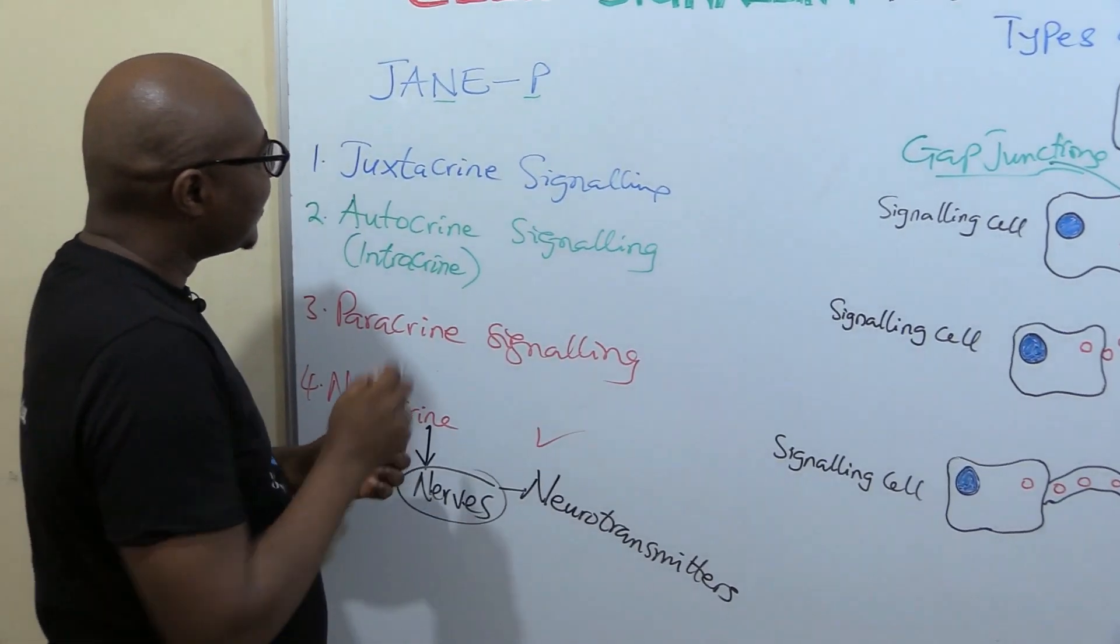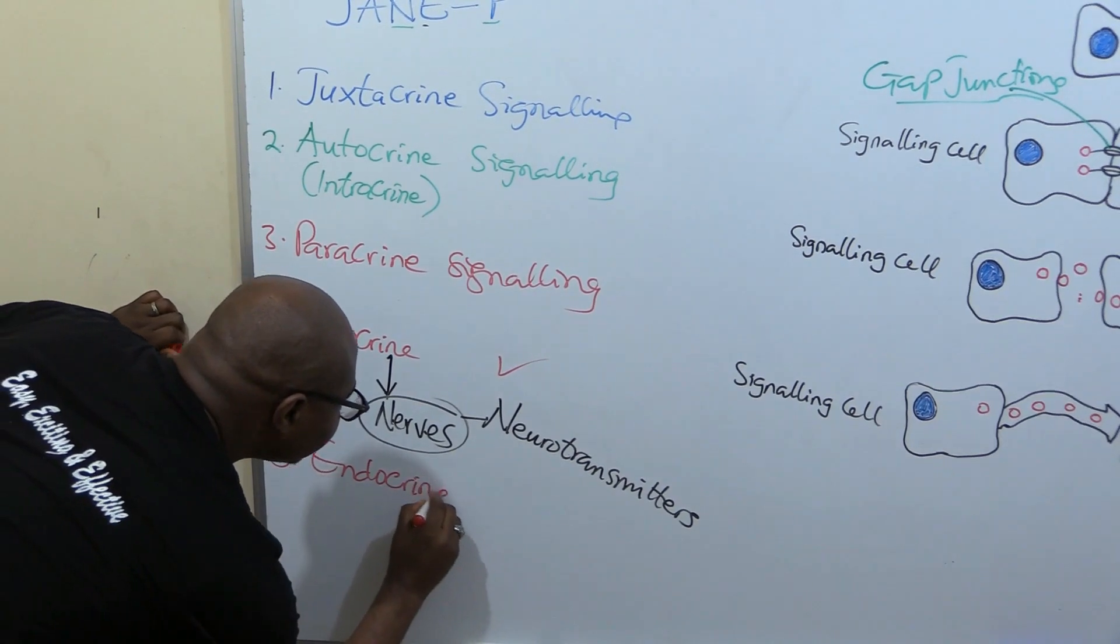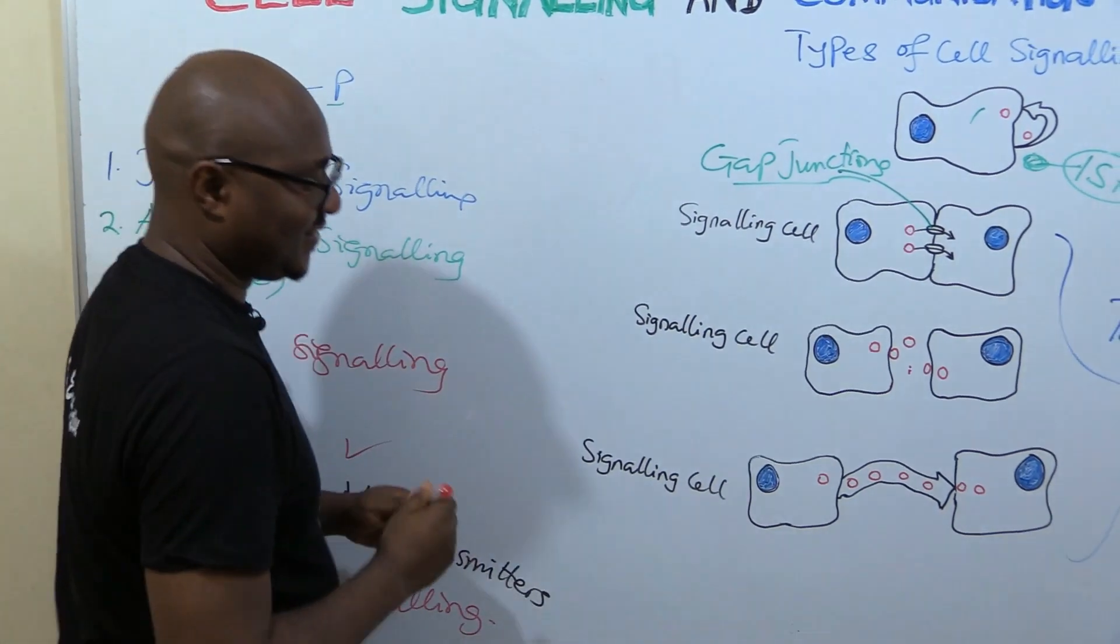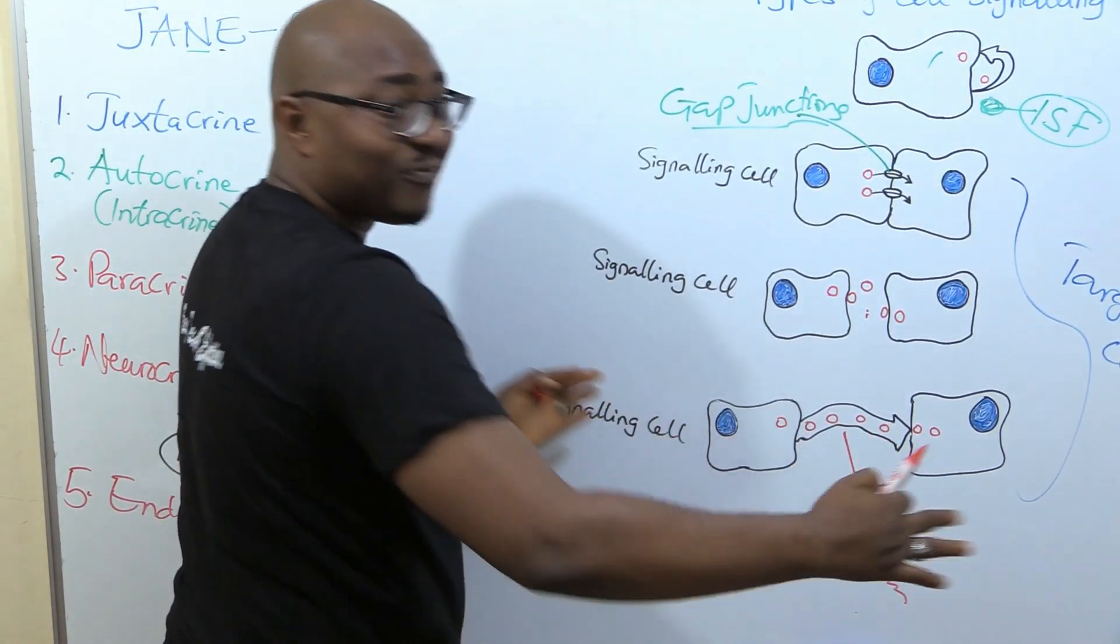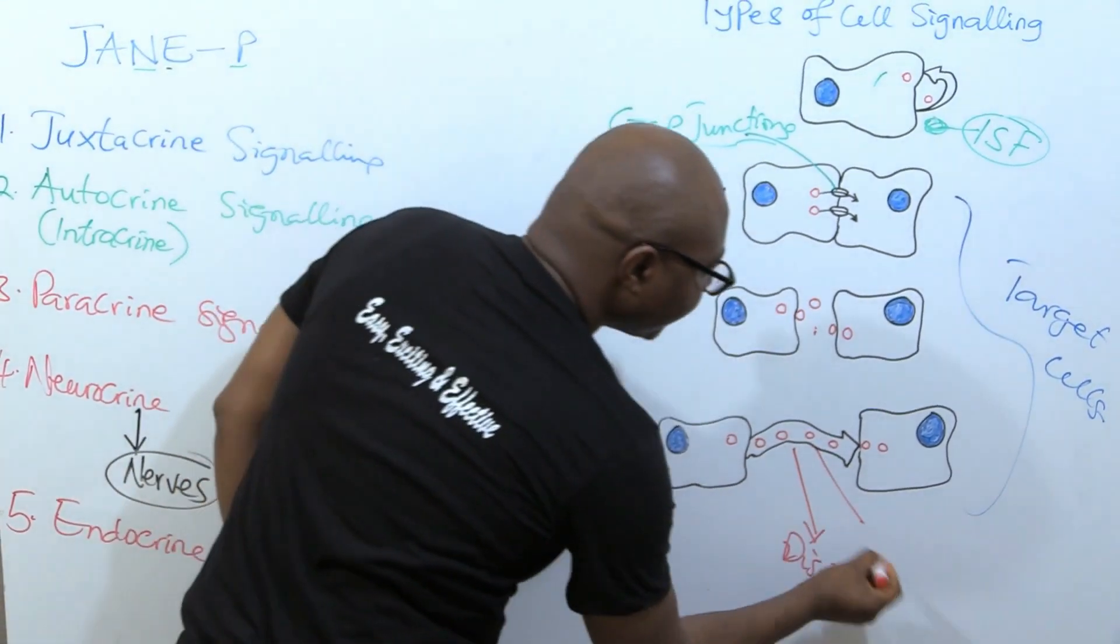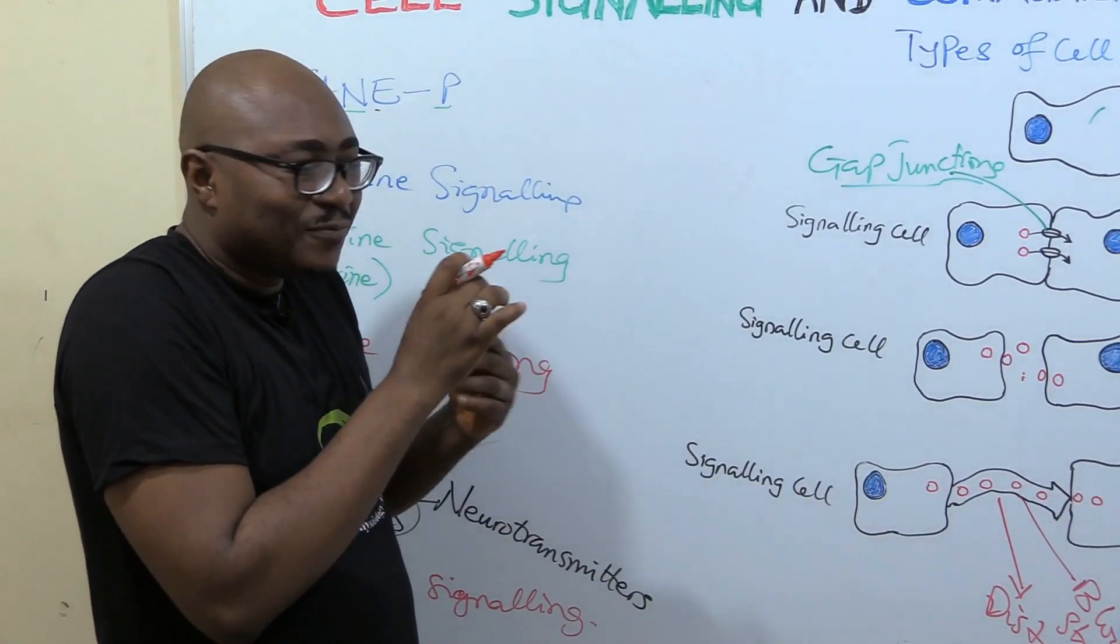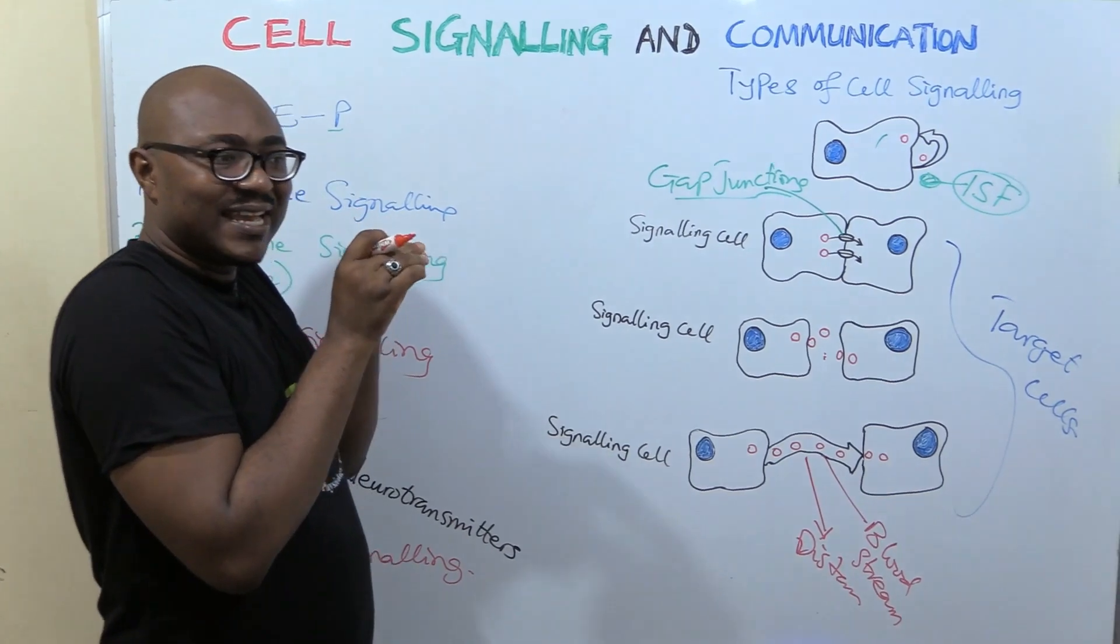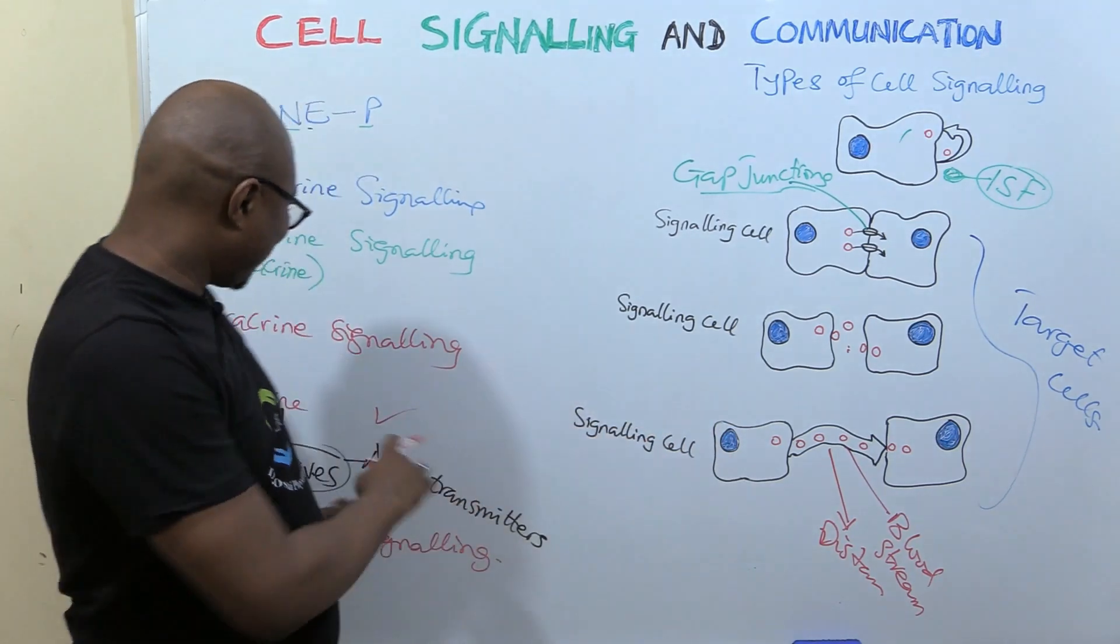Let's talk about the last one, E stands for endocrine signaling. Endocrine signaling is also known as signaling at a distance. That is this one here. See why there's an arrow—there's a lot of distance between the signaling cell and the target cell. They are not close at all. So this thing here is signifying the bloodstream. Because of the distance, they are far. The diffusion cannot take it to where it needs to be, so it needs to enter into the blood. When the signaling cell releases the ligand, it enters the bloodstream and the blood now transports it far away to where it is needed.